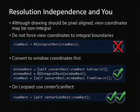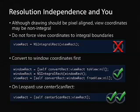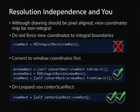There is a method on NSView called centerScanRect, which we intend to handle the basic, most common case for you. The methods work somewhat in the seed you have right now — it's not perfect, but we do intend to improve it for the Leopard release. You can go ahead and experiment with it now; it will do the conversion between coordinate systems for you.